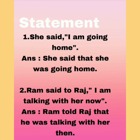Now let's look at a statement example. 'She said, I am going home.' This is a statement in present continuous tense — 'am going.' When converting to indirect speech, add the conjunction 'that.' The pronoun 'I' changes to 'she,' and 'am' changes to 'was.' So the indirect speech is: 'She said that she was going home.' Present continuous changes to past continuous.